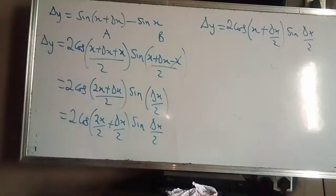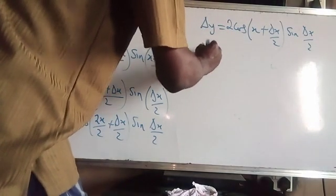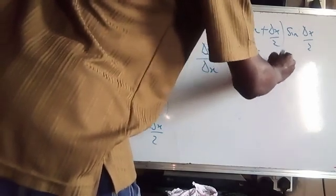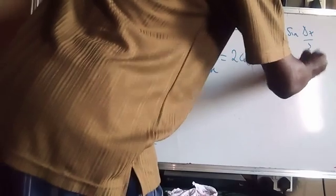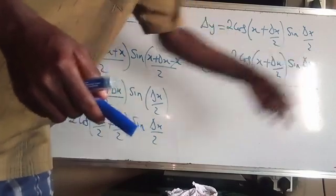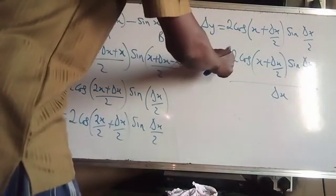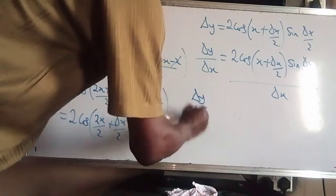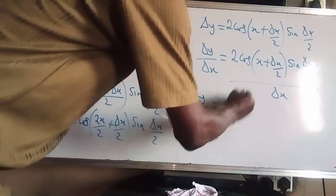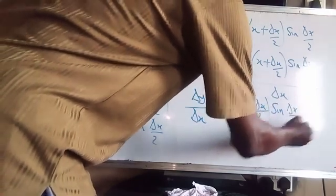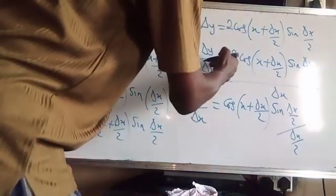Now let's divide through by delta x. So delta y over delta x equals 2 cos of (x plus delta x over 2) times sine of delta x over 2, everything over delta x. Now, dividing by 2 on the right-hand side brings this 2 down, so delta y over delta x equals cos of (x plus delta x over 2) times sine of (delta x over 2) over (delta x over 2).